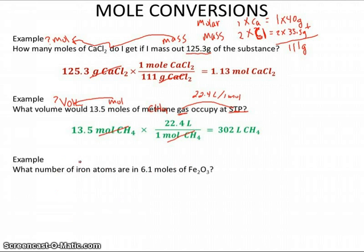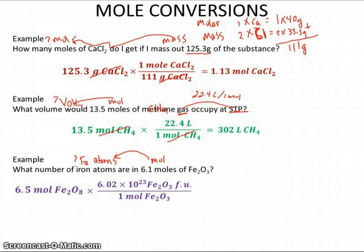Finally, we want to look at what number of iron atoms, so we're trying to find Fe atoms, are in 6.1 moles. So I want to go from moles to atoms, so moles to representative particles. So first thing I'm going to do is write down what I know, 6.5 moles of iron 3 oxide. Draw a bracket, do a conversion. For every one mole of iron 3 oxide, there is going to be 6.02 times 10 to the 23rd individual units of that. We call this formula units, so that's what that stands for.